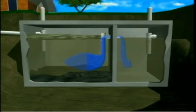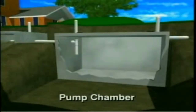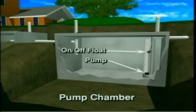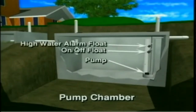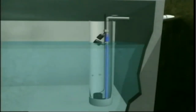The dosing chamber, or pump chamber, collects the effluent that flows from the septic tank. It's constructed of concrete, polyethylene, or fiberglass, and is fitted with a pump, a pump control float, and a high water alarm float. Once the effluent in the tank reaches the level of the control float, it triggers the pump to turn on.